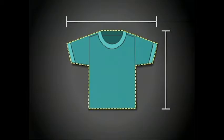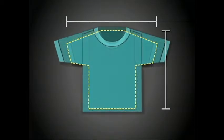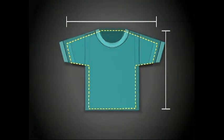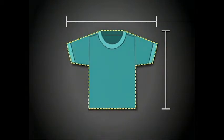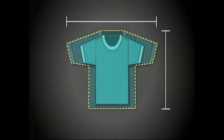The dimensional change can either be a growth, which is an increase of the length or width dimensions of a specimen. The more common dimensional change is that of shrinkage, which is the decreasing of the length or width of a specimen.